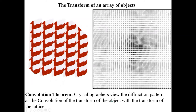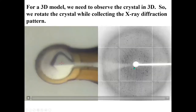In crystallography, we talk about a convolution theorem. The diffraction pattern is the convolution — or you can think of it as a product — of the transform of the object (a duck) with the transform of the lattice. Here we have ducks on a lattice, and this gives us our transform or diffraction pattern.